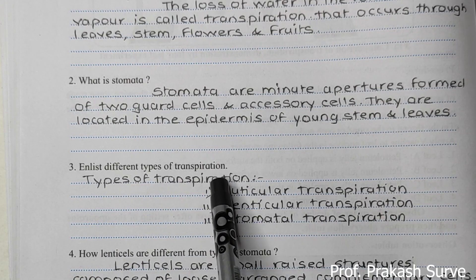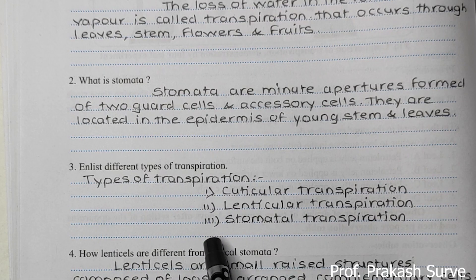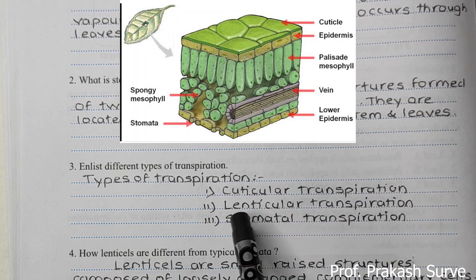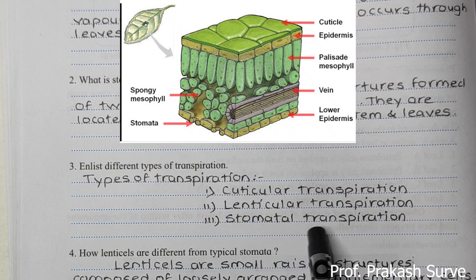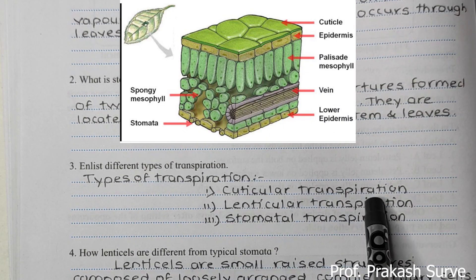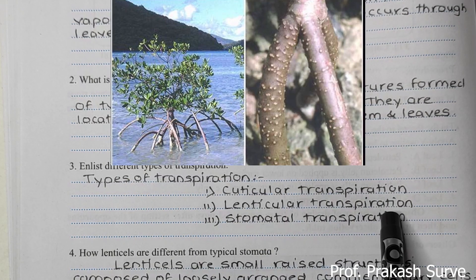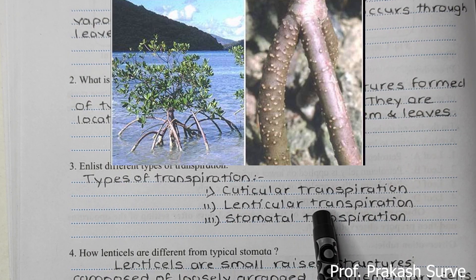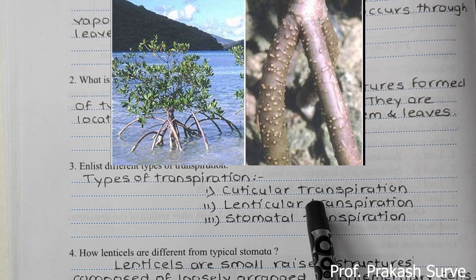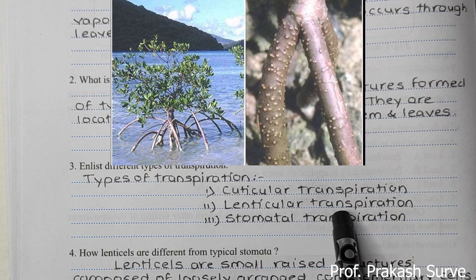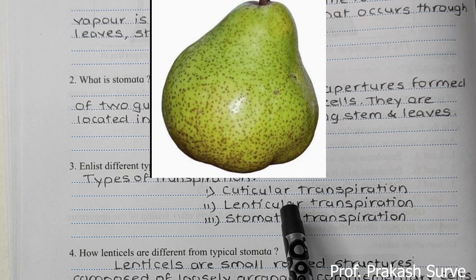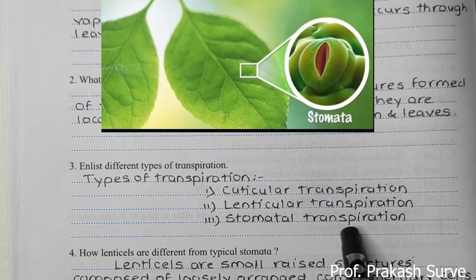Enlist different types of transpiration. There are three main types: first, cuticular transpiration — through the cuticle present on the surface of the leaf above the epidermis, which may be thinner or thicker depending on the type of plant. Second, lenticular transpiration — observed through lenticels, such as those on pneumatophores (roots of marshy plants) and on some fruits. Third, stomatal transpiration — mostly observed on leaves through the stomatas.